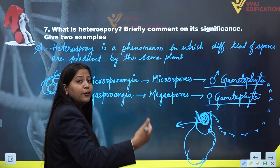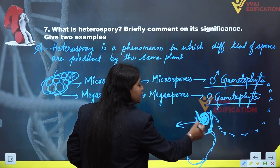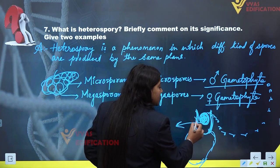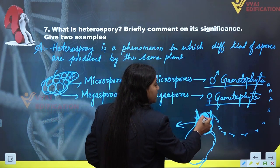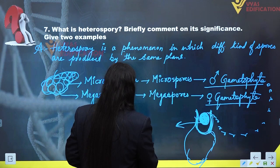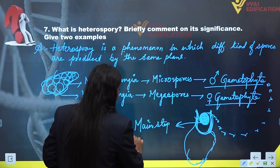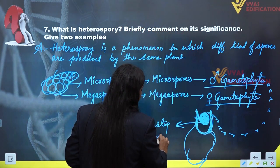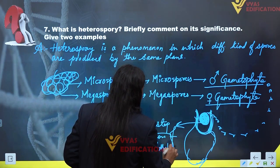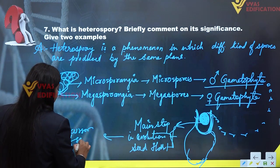The zygote develops inside the megasporangia, and the megasporangia is present on the sporophyll. This retention of the zygote on the megaspore and on the gametophyte is the main step in the evolution of seed habit, as it is a precursor of seed habit.